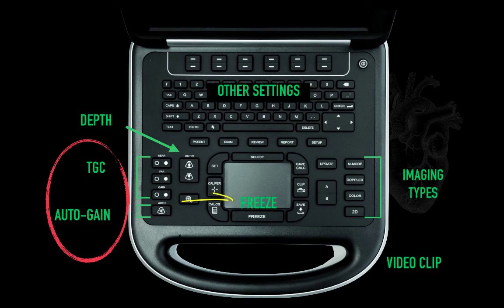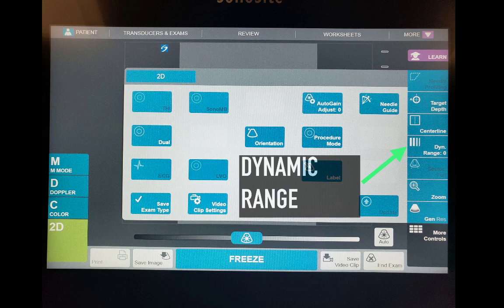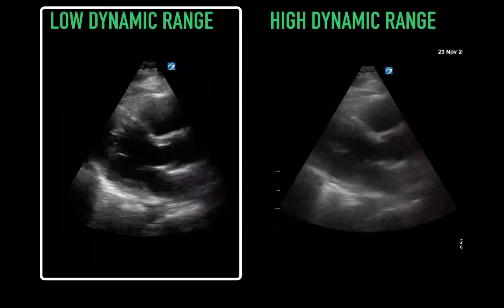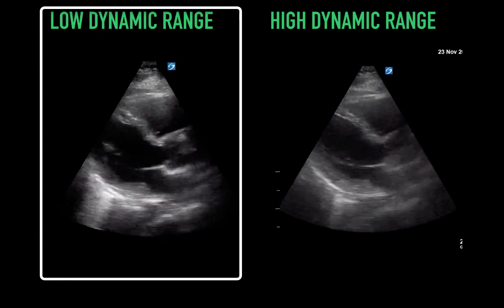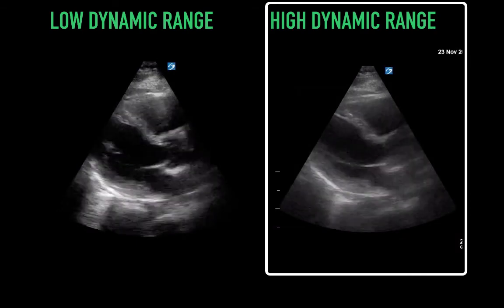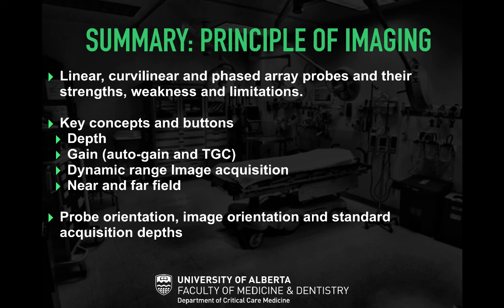Other settings to be familiar with include freeze, imaging types such as M-mode, Doppler, Color, and 2D, and how to obtain a video clip. Next, dynamic range — a button few are familiar with — helps adjust your gray scale. Increasing the dynamic range means more shades of gray, which can make tissue boundaries easier or more difficult to see. Low dynamic range means less of a gray spectrum, making tissue boundaries easier to identify. High dynamic range means more colors across the gray spectrum, making tissue boundaries more challenging to see. In summary, we covered different probe types and key concepts like depth, gain, dynamic range, and near and far field.